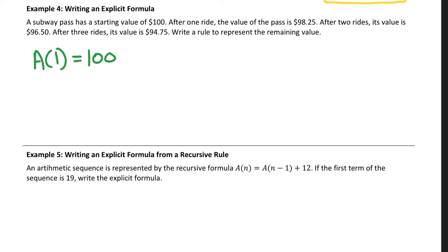After I take a ride, obviously the amount on that pass decreases. Well, that's our common difference. So our common difference is how much that ride pass costs for one, or how much that ride pass uses up for one ride. So after one ride, it's $98.25. So over here, I'm going to go $100, $98.25, $96.50, and $94.75.